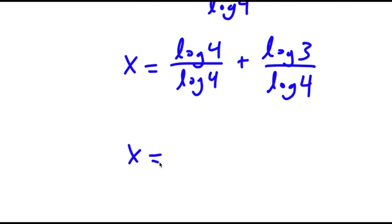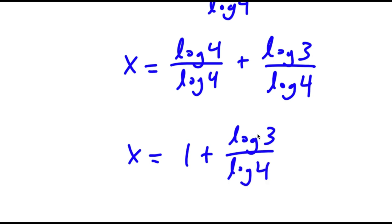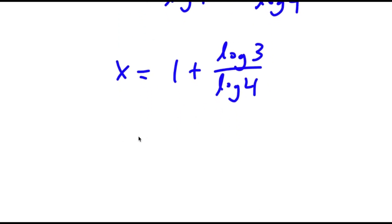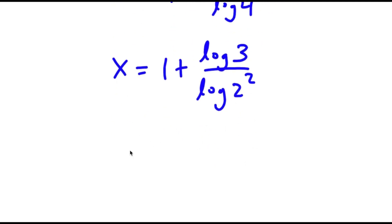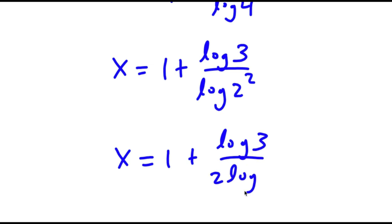This is equal to log 4 over log 4 plus log 3 over log 4. Now log 4 and log 4 cancel out. So now I have 1 plus log 3 over log 4. Now log 4 equals 2 squared, so I have x is equal to 1 plus log 3 over log 2 squared. And log 2 squared is the same thing as 2 times log 2.